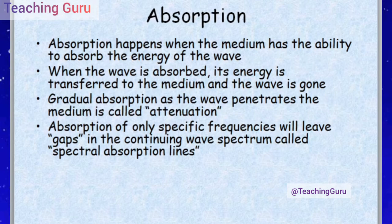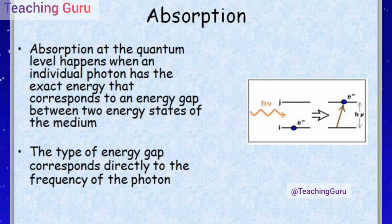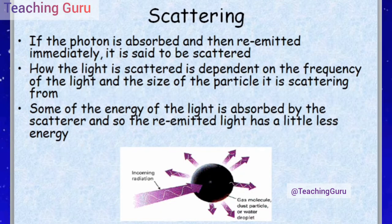Spectral absorption lines are very important for competitive examinations like JEE Mains and JEE Advanced — they can ask you about the frequency of these spectral lines. At the quantum level, absorption happens when an individual photon has the exact energy that corresponds to an energy gap between two energy states of the medium, and the type of energy gap corresponds directly to the frequency of the photon.